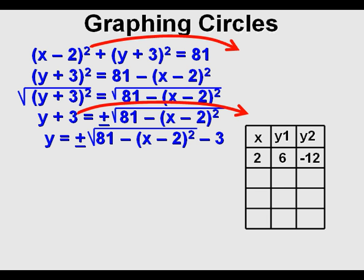For x equals 2, we simply have the square root of 81, which is 9, minus 3, or 6, for one y coordinate, and negative 9 minus 3, or negative 12, for our other y coordinate when x equals 2.